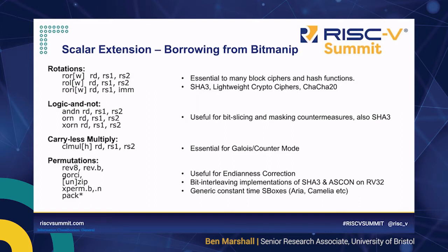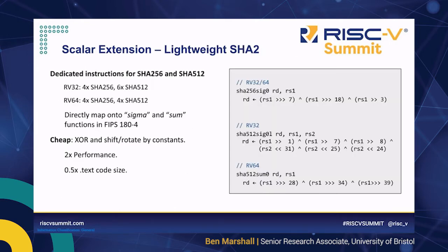Those are the more general-purpose instructions in the scalar cryptography extension. Moving on to the more special-purpose ones, starting with SHA-2. SHA-2 is a very popular hash function, part of the TLS standard used in all sorts of places. We use a very lightweight approach to accelerating it by wrapping up the sigma and sum functions as described in the SHA-2 specification. The operations are basically shifts and rotations by constants, then XORing them all together — extremely cheap to implement. They give around a 2x performance boost and halve the size of your implementation: very cheap, but with outsized performance improvement.